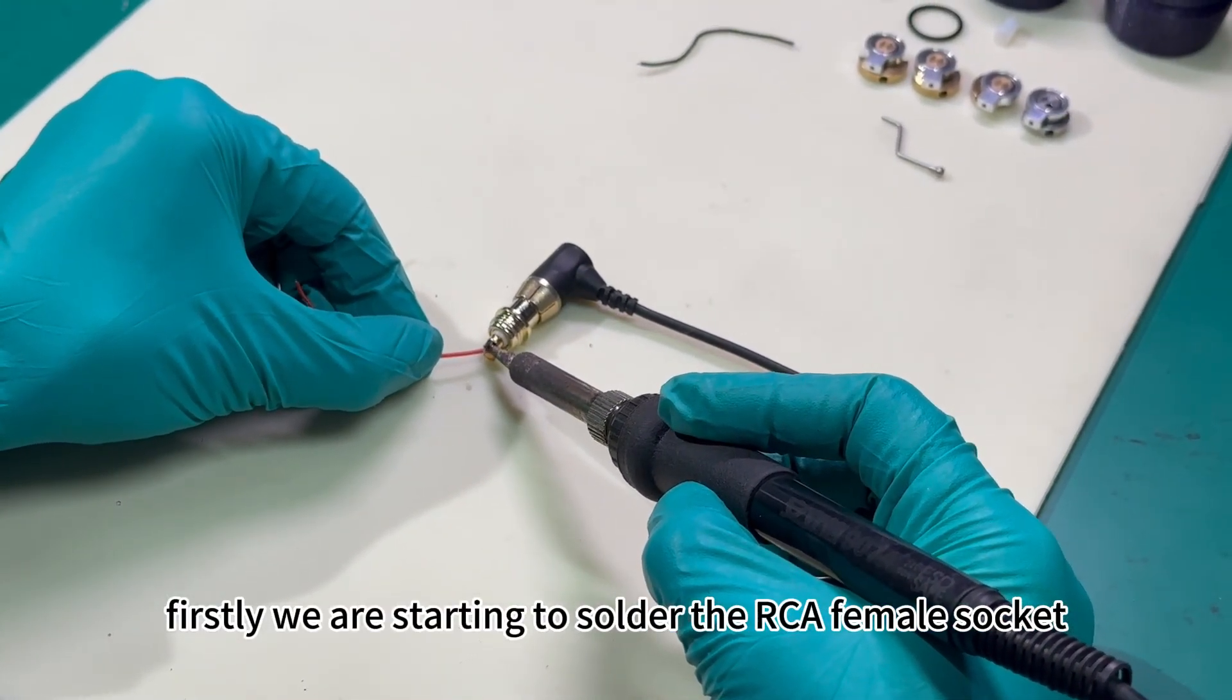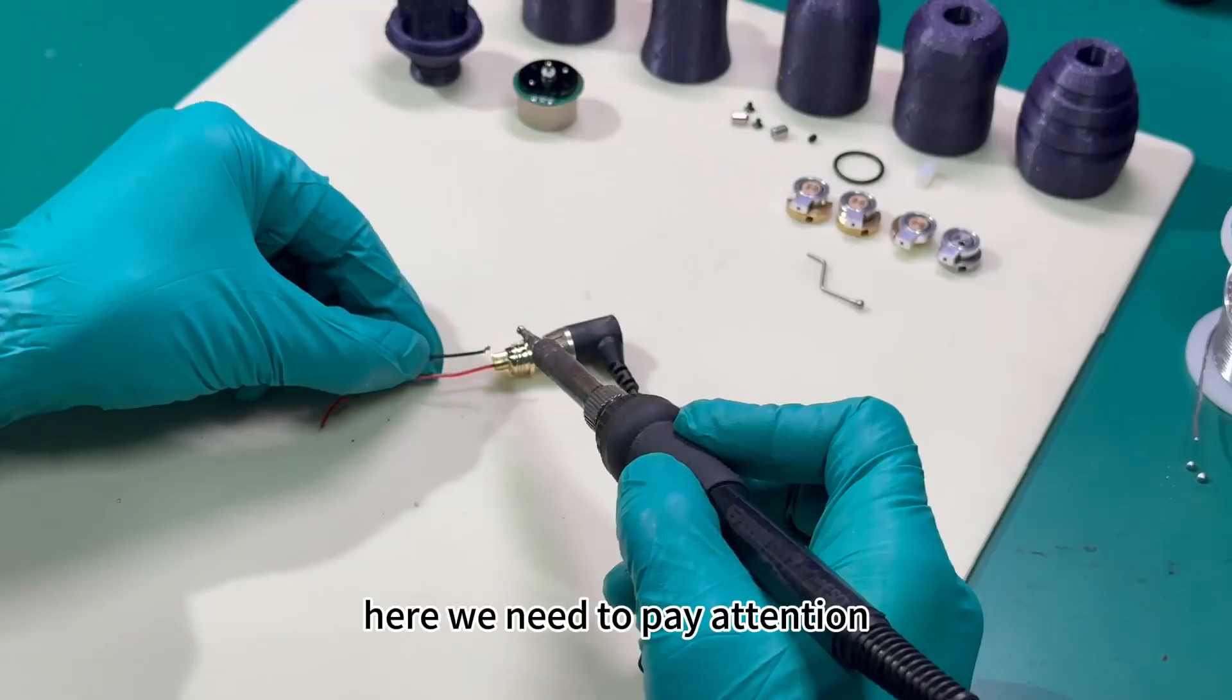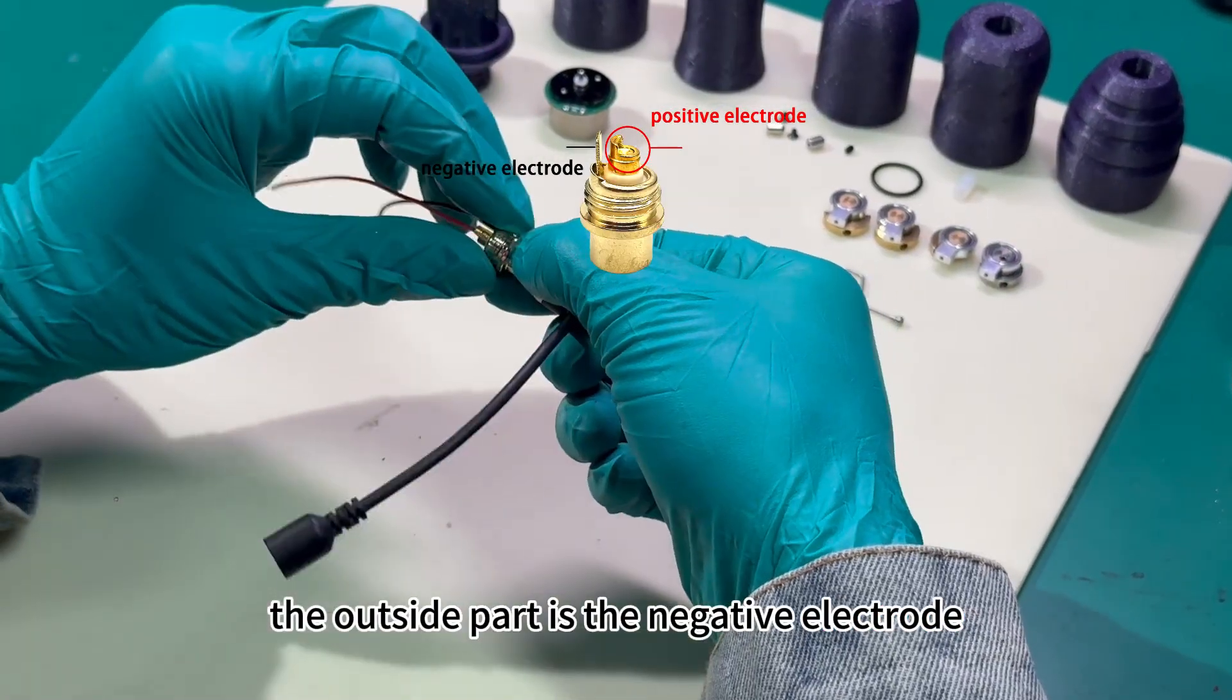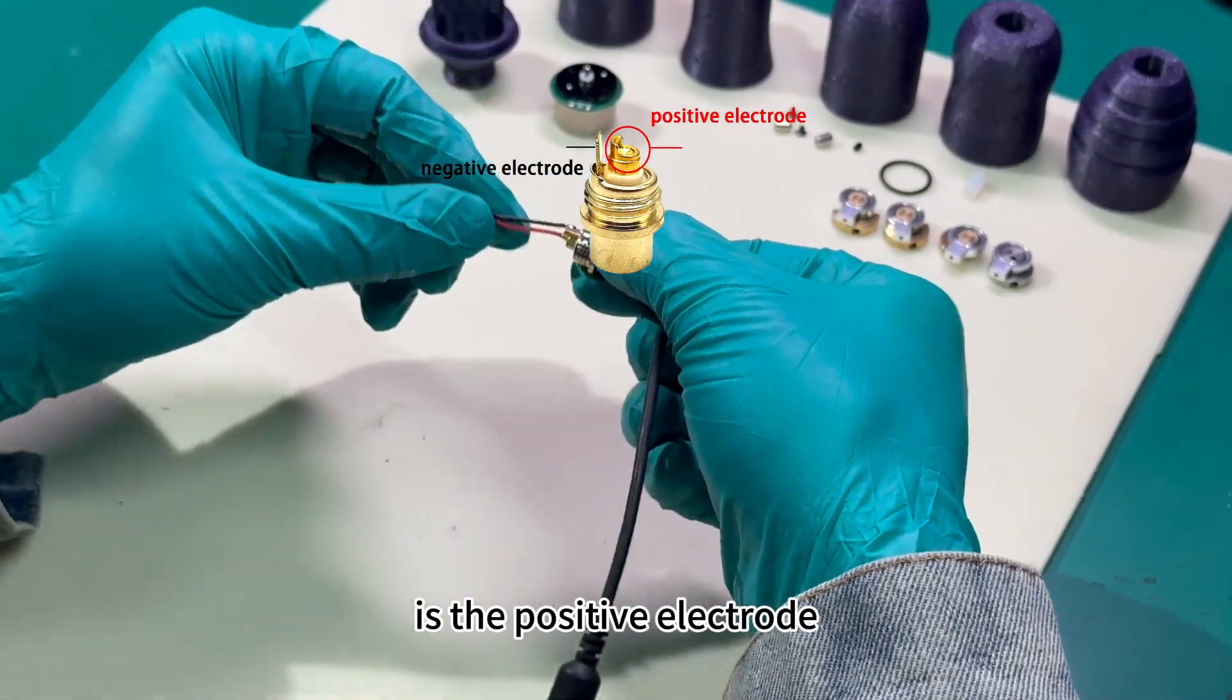We start by soldering the RCA female socket. Here we need to pay attention: the outside part is the negative electrode, and the middle part is the positive electrode.